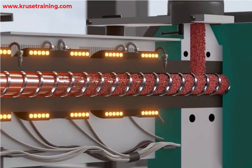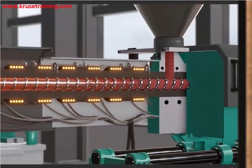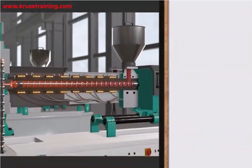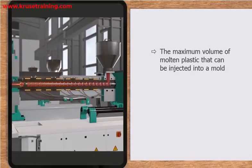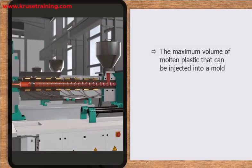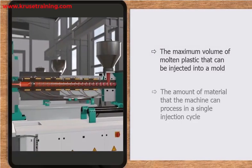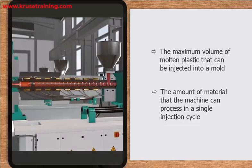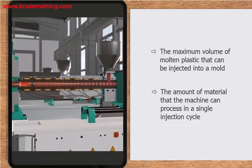The plasticizing cylinder shot capacity refers to the maximum volume of molten plastic that can be injected into a mold by a plastic injection molding machine. It represents the amount of material that the machine can process in a single injection cycle.